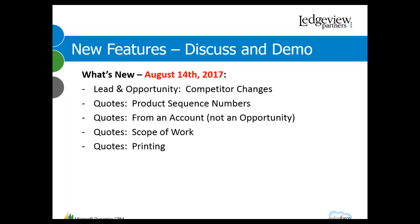On leads and opportunities, some big changes to the way we handle competitors. As most of you know, on the right-hand side of the screen you can enter as many competitors as you want, which allows for lots of flexibility. However, it makes it difficult to do analysis because it's not a field right on the lead or opportunity record. With feedback from customers, we've changed that — now you just enter competitor one, competitor two, competitor three as separate fields, so lots of easy analysis on views and advanced finds.